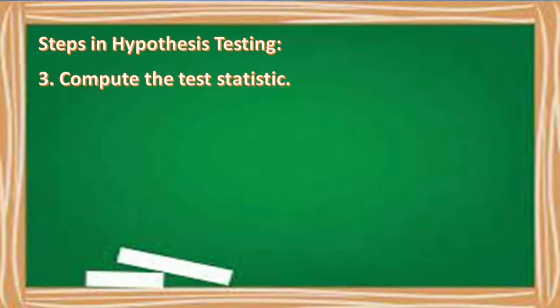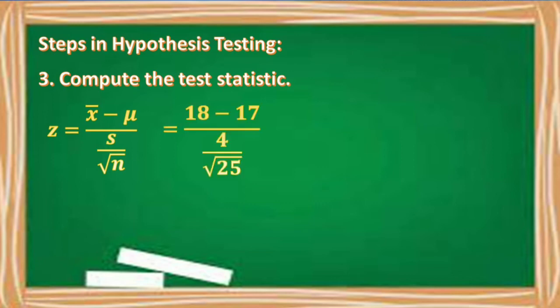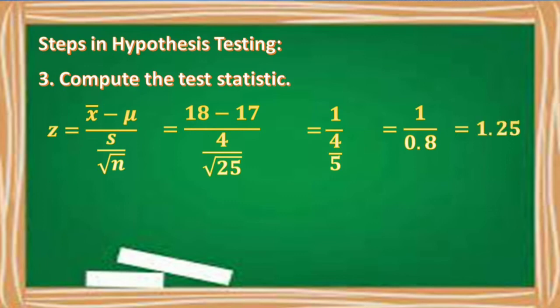Number three, compute the test statistic. We use the formula Z is equal to X-bar minus mu, all over S divided by the square root of N. Substituting the values: 18 minus 17 all over 4 divided by the square root of 25, which equals 1 over 4 divided by 5, and 4 divided by 5 is 0.8. So 1 divided by 0.8 is equal to 1.25.